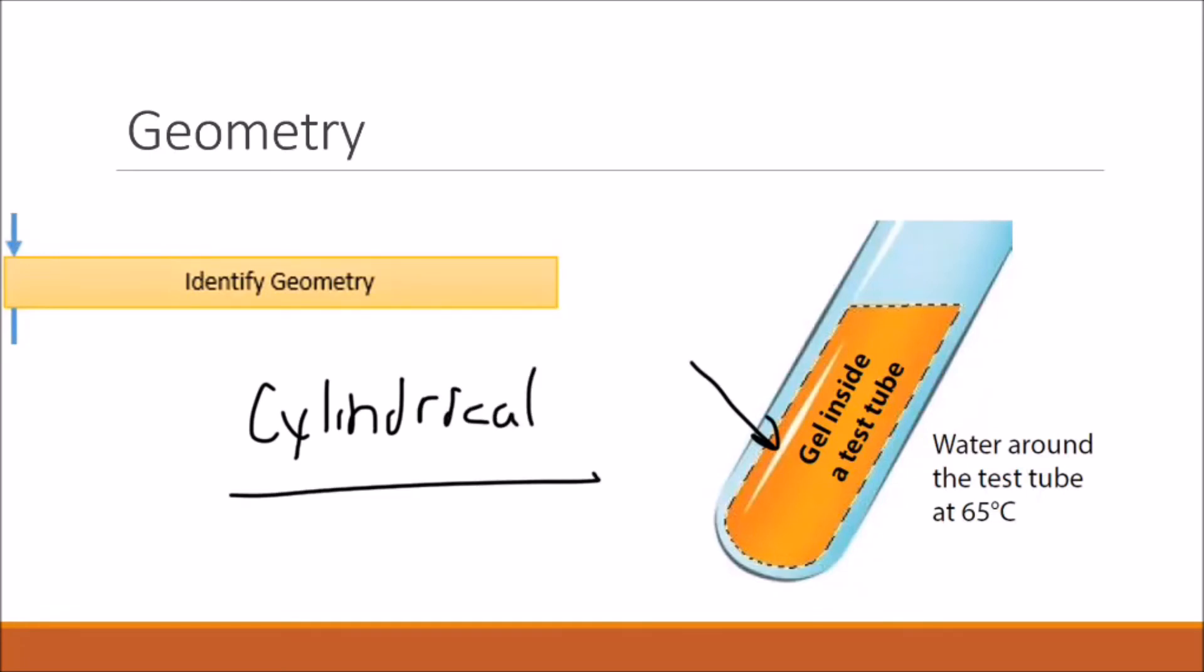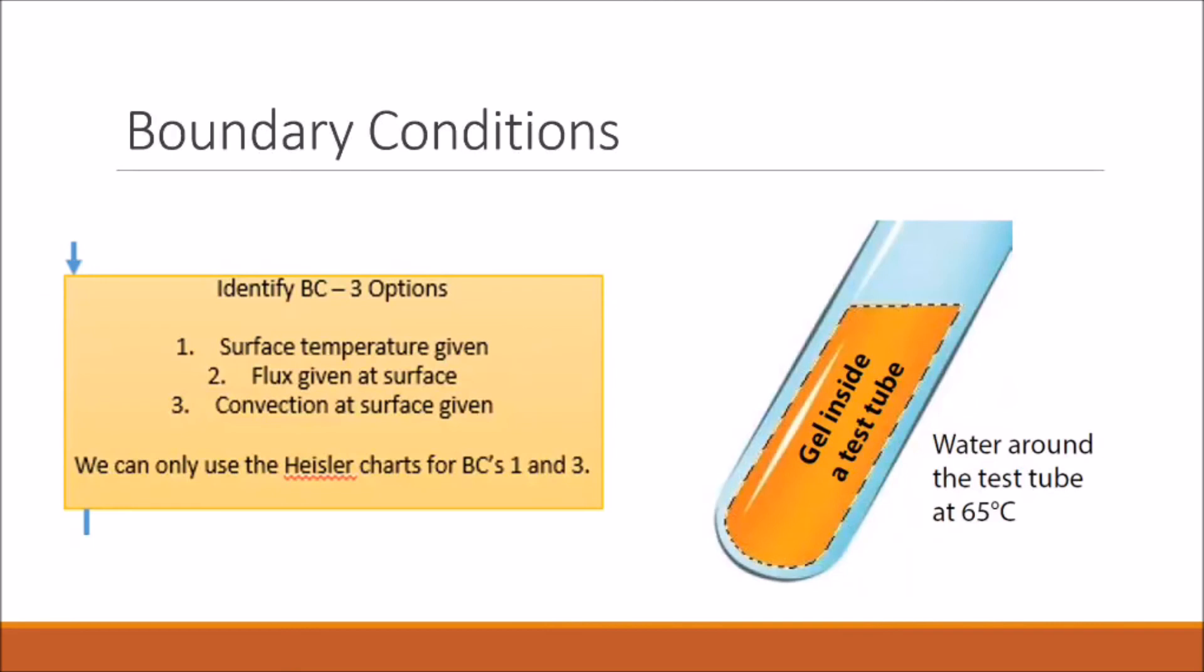In order to use the Heisler charts, we need to make sure that our boundary condition is either boundary condition one or boundary condition number three. Because in the problem we're given a heat transfer coefficient of the water, we can assume that we have some type of convection at the surface, meaning that we are good to go to use our Heisler chart.